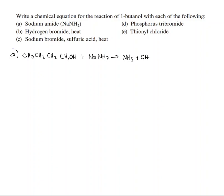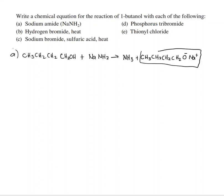The product is CH₃CH₂CH₂CH₂O⁻ Na⁺. So that is the product in Part A.